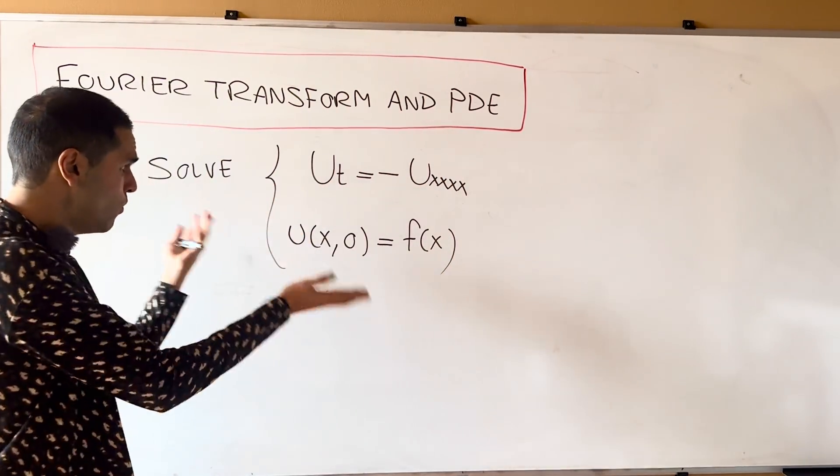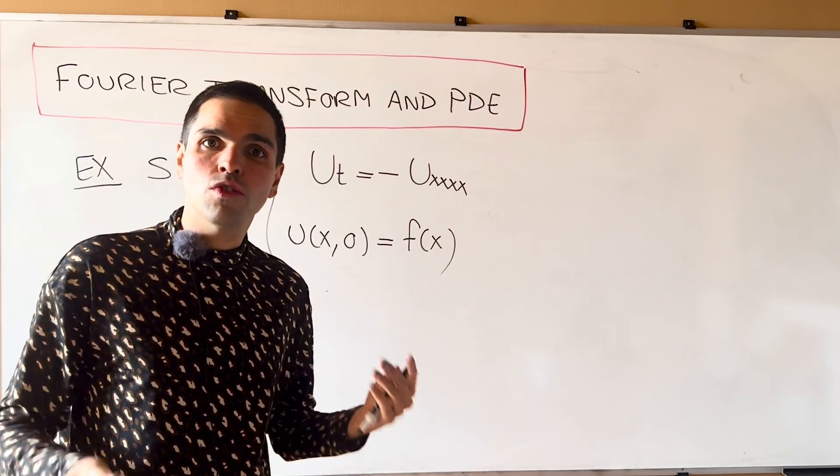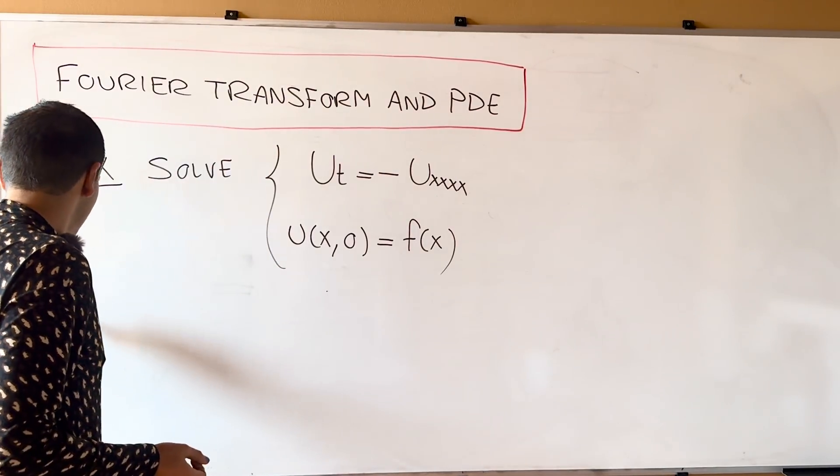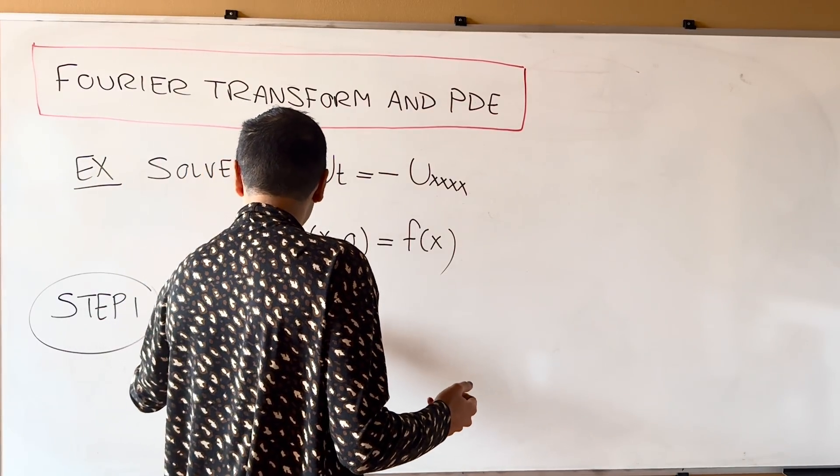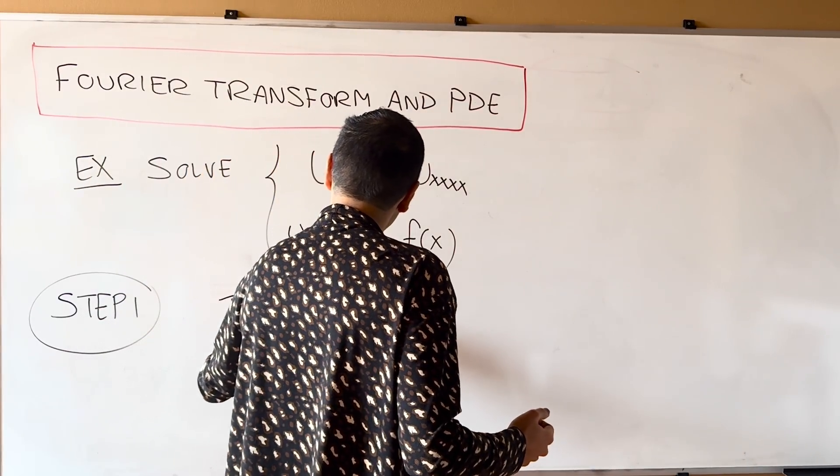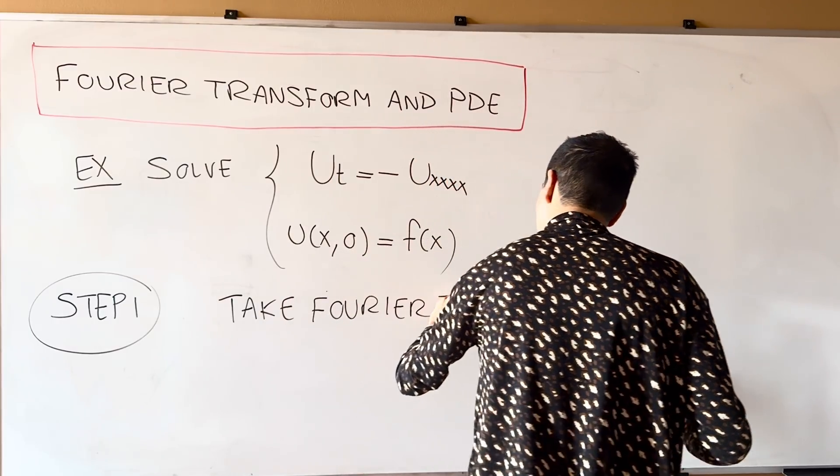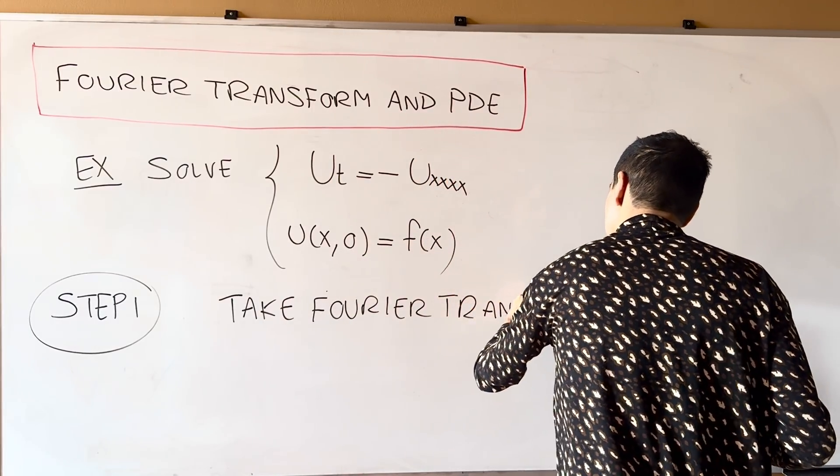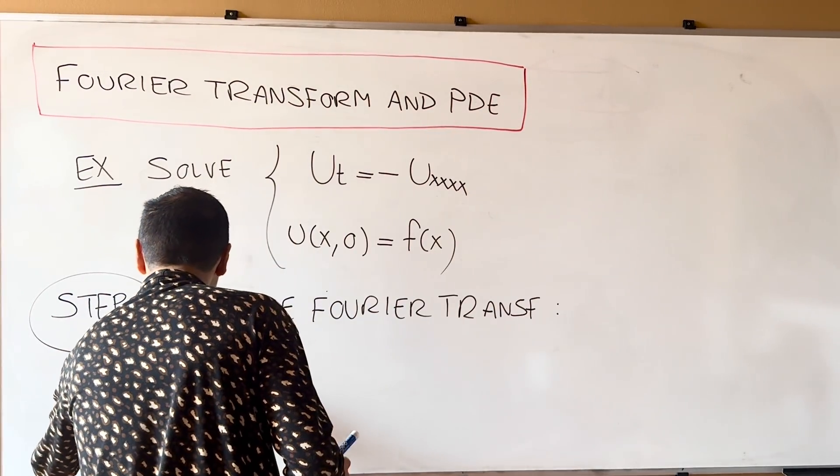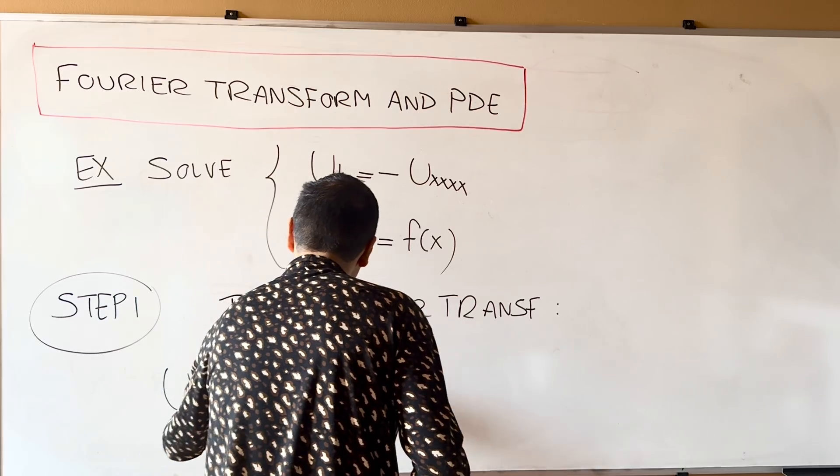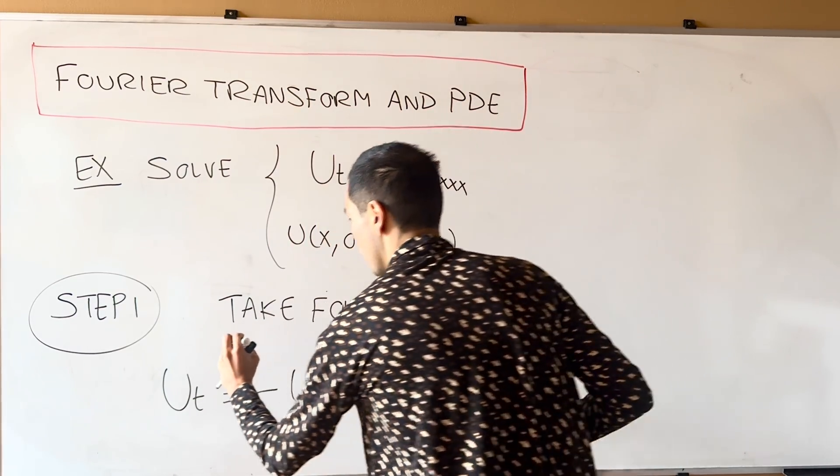And we will do it at least formally using both the Fourier transform and the inverse Fourier transform. So the first step is, as usual, take Fourier transforms, so put hat on both sides of the equation, UT equals minus UXXXX, so put hats.